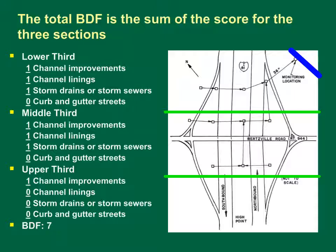This is a plan view diagram of the I-81 site near Harrisburg, Pennsylvania, from Federal Highway RD-81-045. The small rectangles are catch basins and the arrows connecting them are storm sewer pipes. Water flows from the high point at the bottom to Pine Run, a tributary of Conduit Creek, at the top. The green lines show the approximate locations of dividing lines for each third of the basin. In the upper third, the highway has country drainage with overland flow into swales, so we only have channel improvements. In the middle and lower thirds, we have channel improvements, channel linings, and storm drains or storm sewers. There are no curb and gutter streets at this site. Adding up all criteria gives a site BDF score of 7.